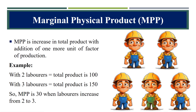Let's first discuss the concept of marginal physical product (MPP), which we have already discussed in laws of variable proportions. The lecture session related to laws of variable proportions is available on my channel; I will share the link in the description. MPP is the increase in total product with the addition of one more unit of a factor of production.